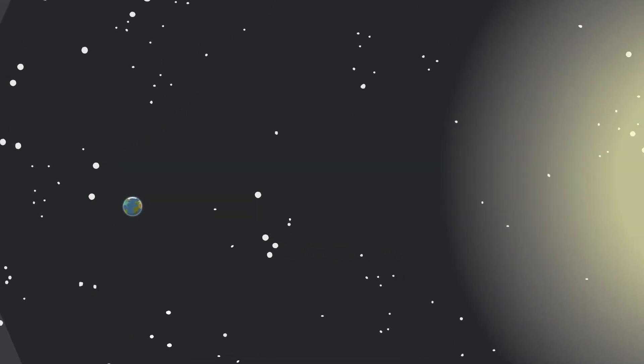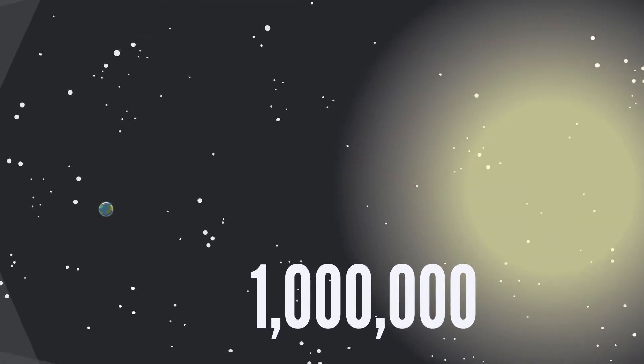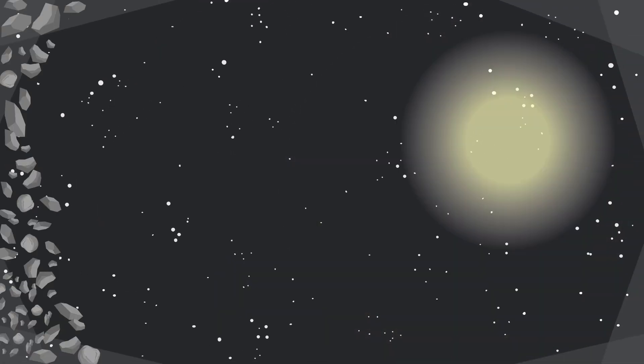The Sun is so big that you can fit over 1 million Earths inside it. The Sun is orbited by 8 planets.